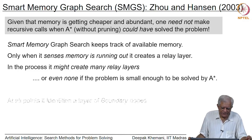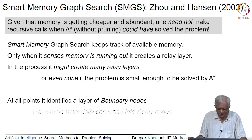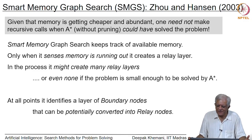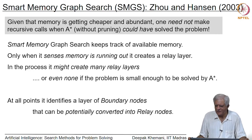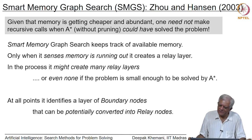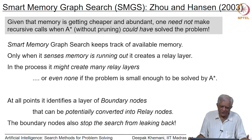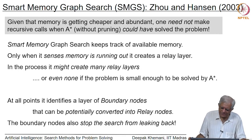SMGS also changed the mechanism by which the search is forced to go forward and not leak back. It does this by creating a layer called a set of boundary nodes. Boundary nodes are those nodes of closed which are just next to the nodes on open. Everything else is deleted except for boundary nodes. When it decides it is time to prune some nodes, those boundary nodes are converted into relay nodes.